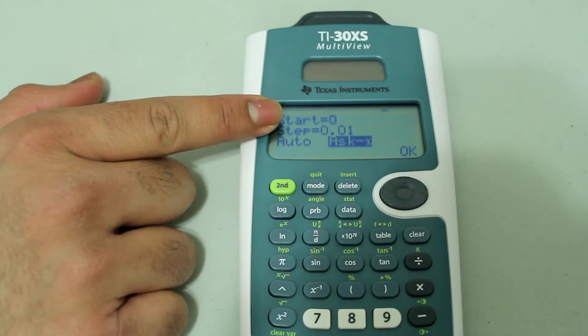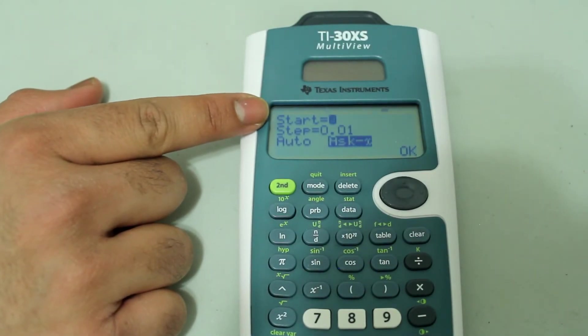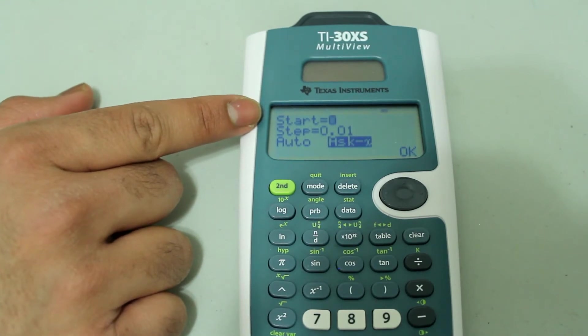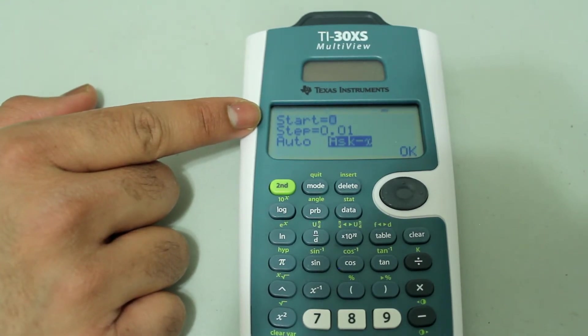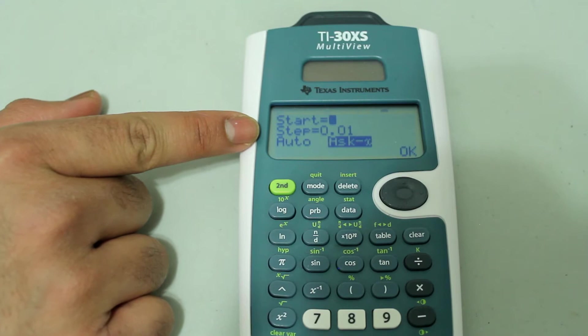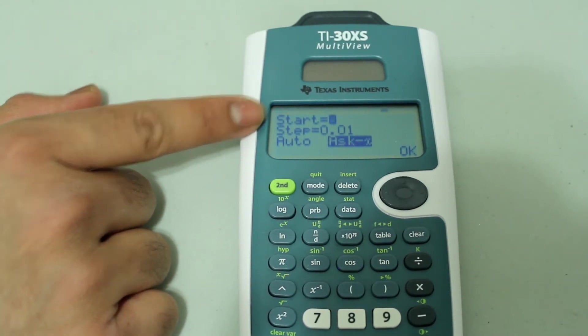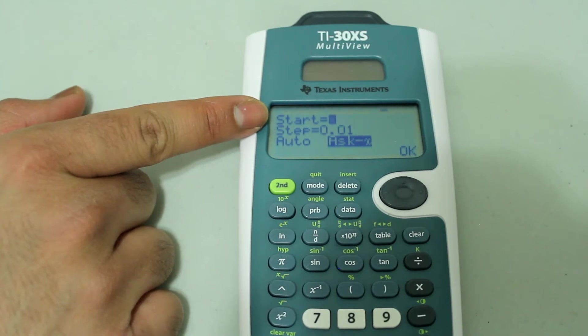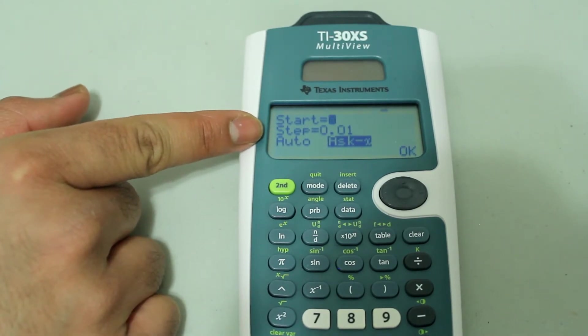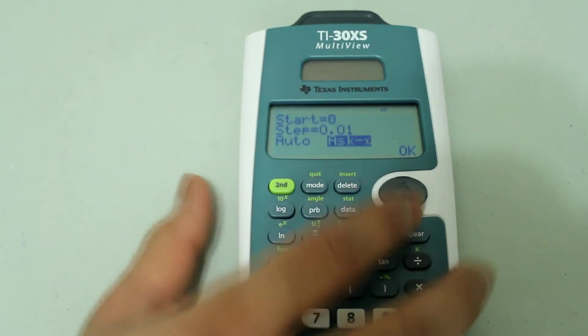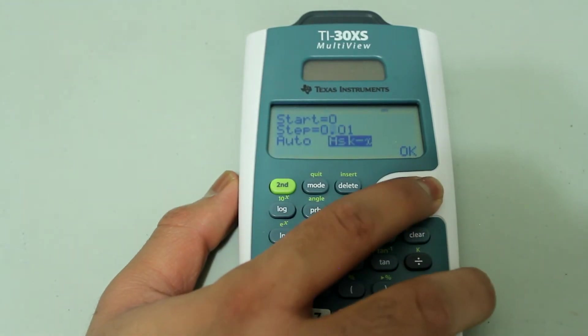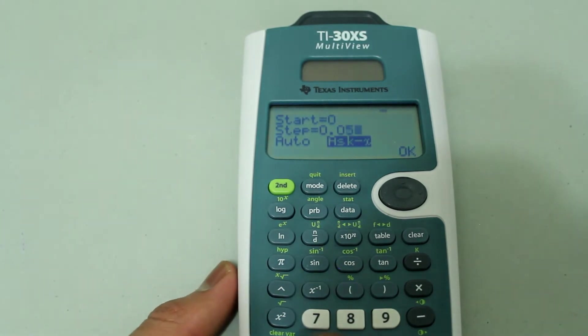The start identifies what x value the table will start at. And the step is the increments for the x values. As of right now, I have the start set at 0 and the step set at 0.01. I'm going to actually change the step to 0.05.